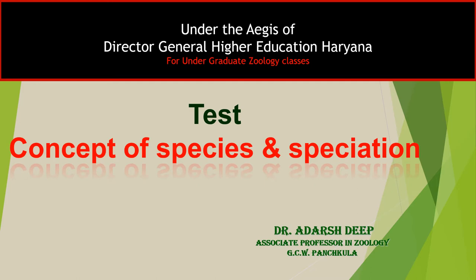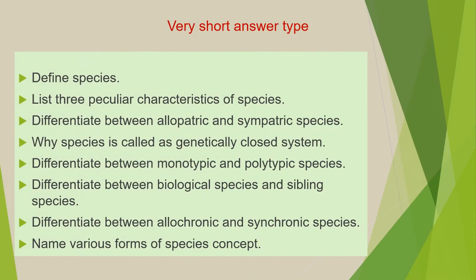These questions may be divided into three categories. The first category is very short answer type questions, which you have to answer in two to three lines. The first question of this category is: define species. Second is: list three peculiar characteristics of species. Next is: differentiate between allopatric and sympatric species. Next is: why is species called a genetically closed system?